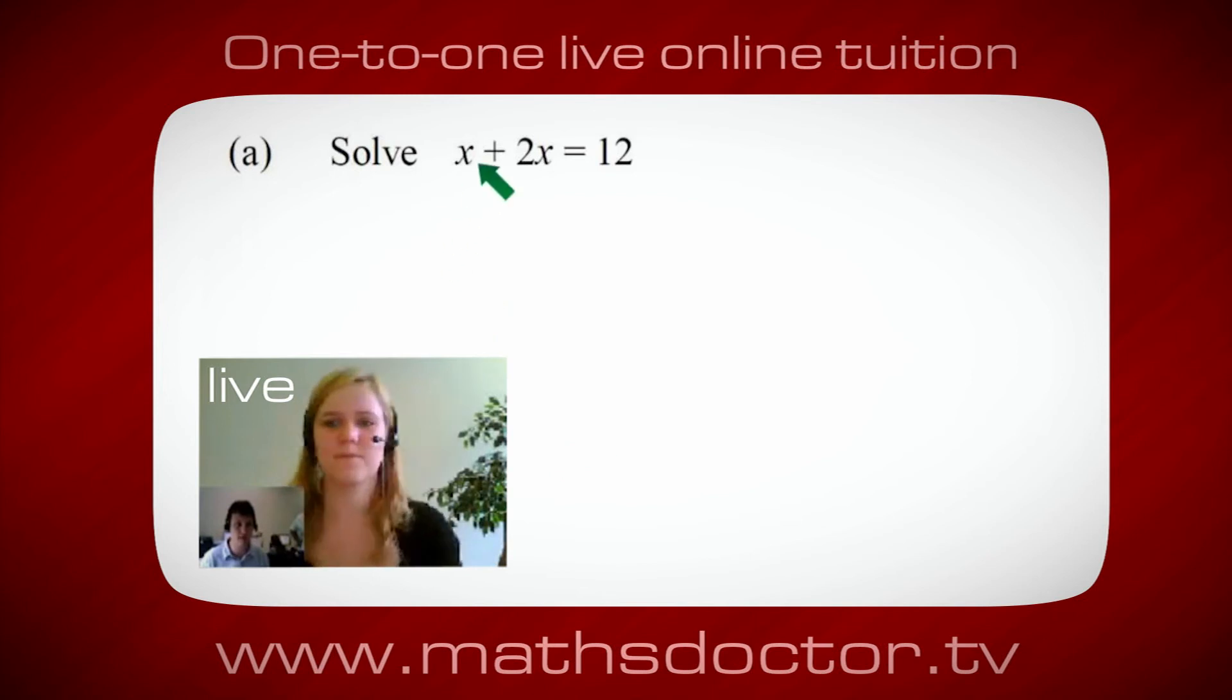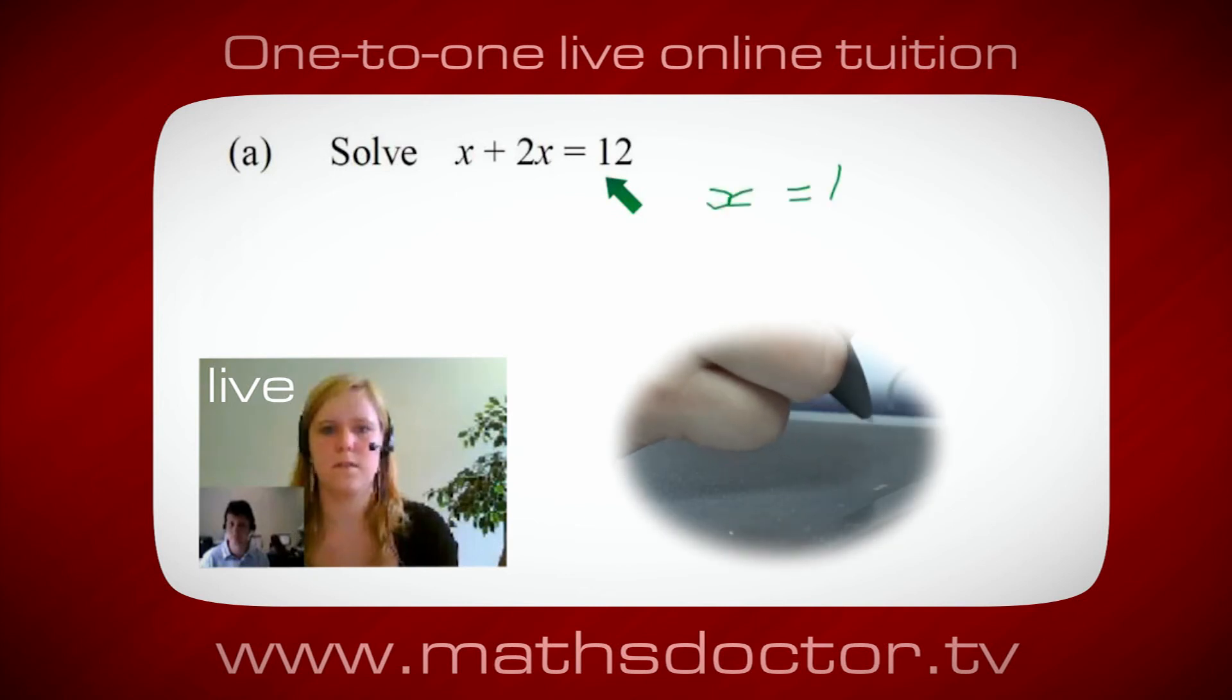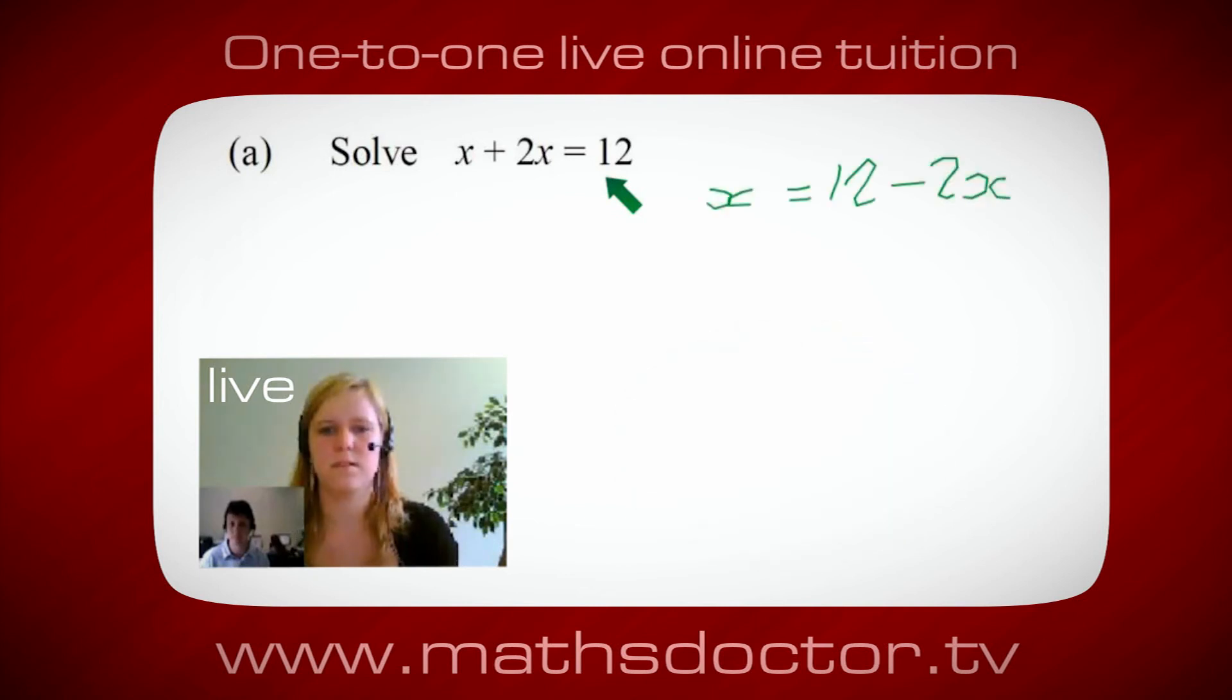Okay, so let's have a look at this one. So solve x plus 2x equals 12. So what do you think you do first? Okay, well I want x on its own so I would put x equals 12 minus 2x.